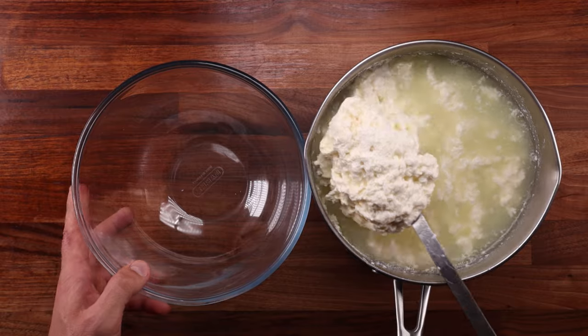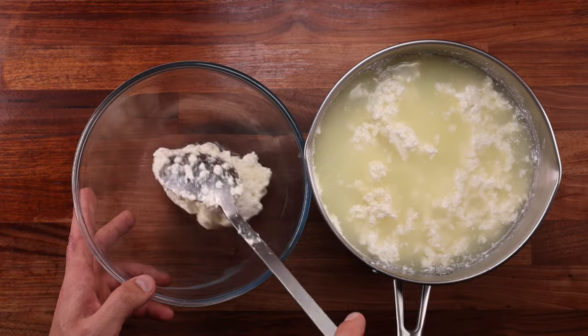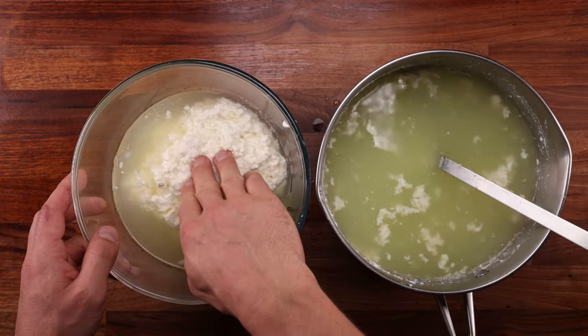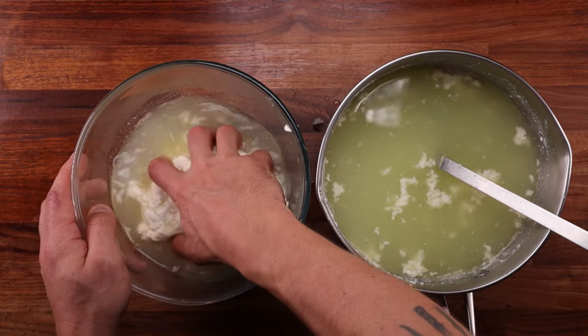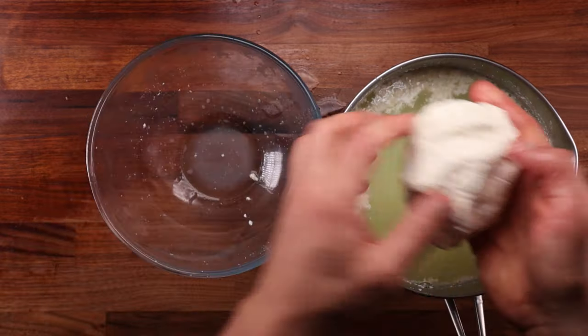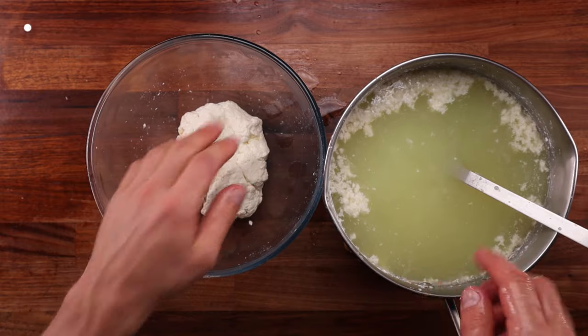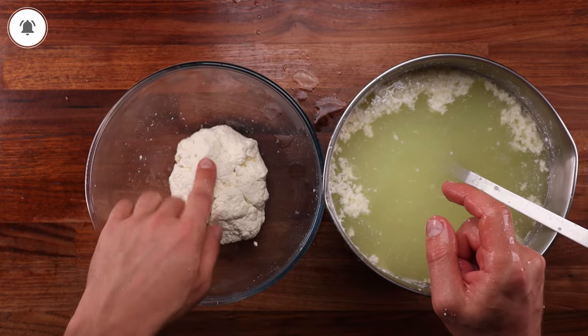Once the majority of the curds are stuck together, transfer it to a clean bowl. From here, we'll switch to using our hands. Press and knead the curd together and pour the excess whey back into the pot. You want to get it to a consistency where it's one cohesive piece of curd.